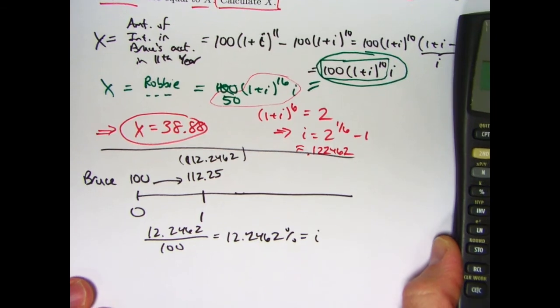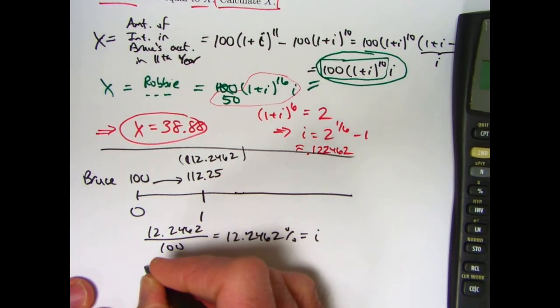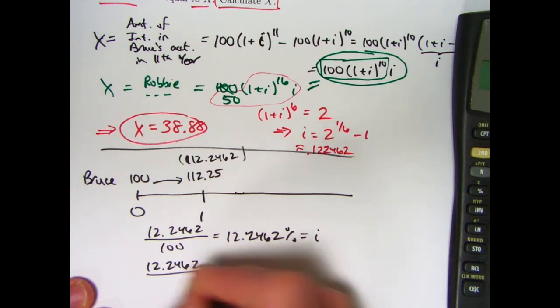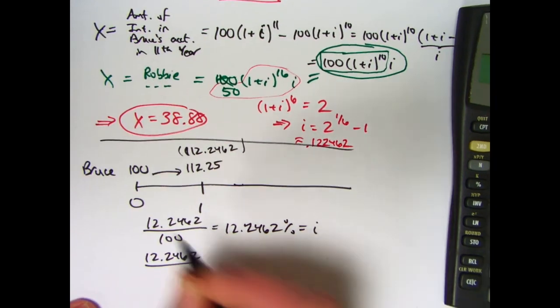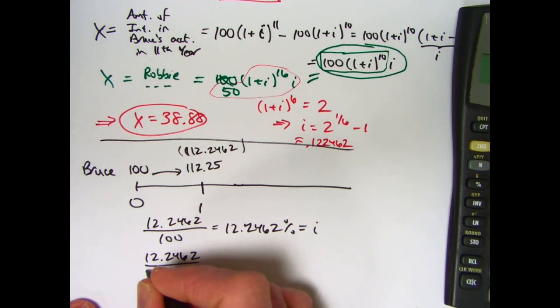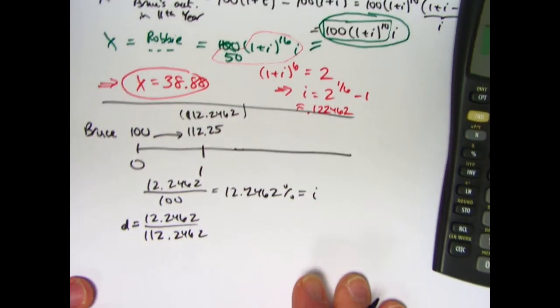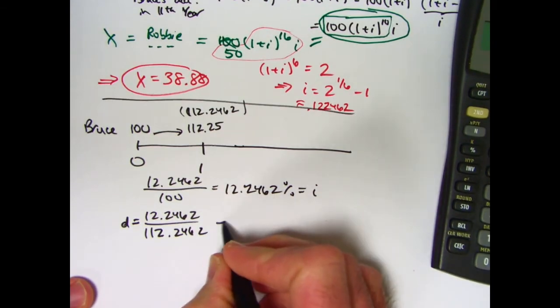Alright. What is d? What is the effective rate of discount? It is the amount of interest, not as a ratio, not as a fraction of the starting amount, but of the ending amount. Let me go ahead and use all the decimals here. This is going to be d, the effective annual rate of discount.